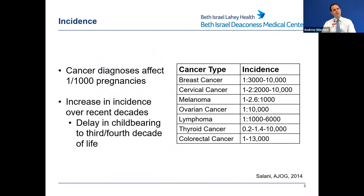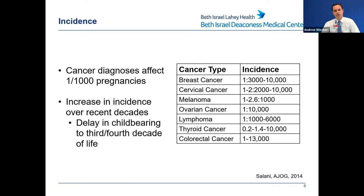Cancer in general affects about one in a thousand pregnancies, and this incidence has been slowly rising as more women delay childbearing into their late third or fourth decade of life. The most common cancers in pregnancy are not gynecologic cancers — breast cancer and lymphoma are slightly more common, and melanoma is becoming more common in young adults as well. Both cervical cancer and ovarian cancer do occur in pregnancy with some frequency, so it's helpful for OBGYNs to be familiar with that.